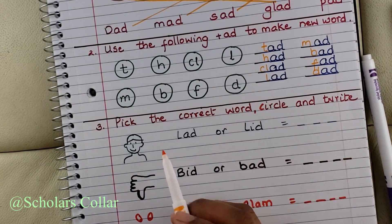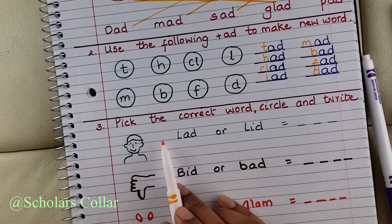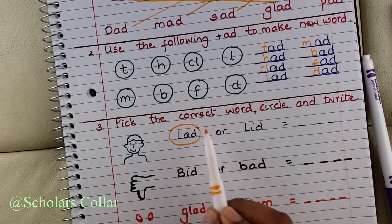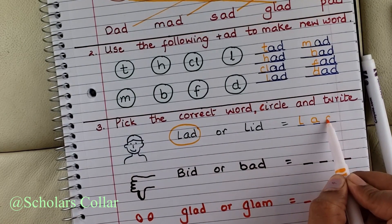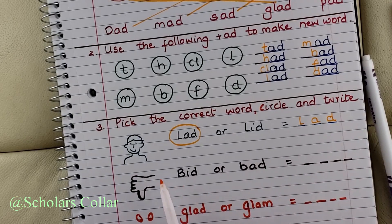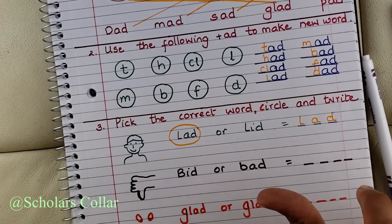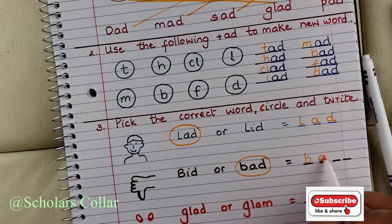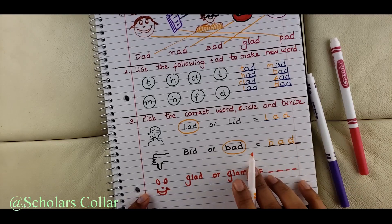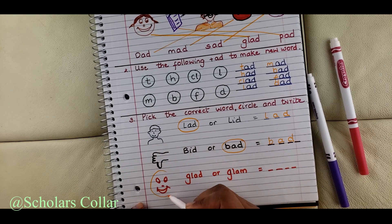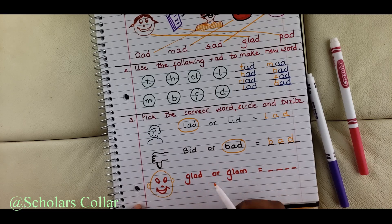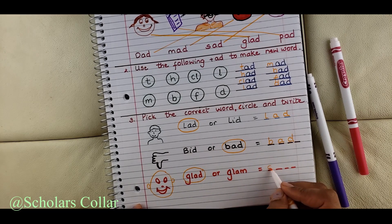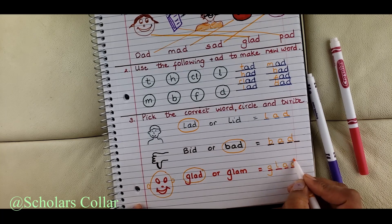Next we are going to pick the correct word — circle and then write. This is a boy, also known as lad or led — it's lad. Circle lad and print exactly how lad is written: L-A-D, lad. Thumbs down — is it bid or bad? Thumbs down is bad. Circle bad and trace: B-A-D, bad. This is a happy face — are they glad or glam? I think they are glad. Circle glad and write the word glad.